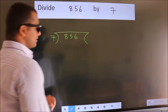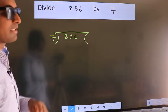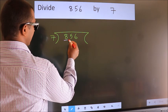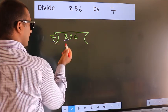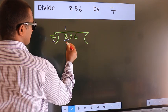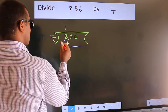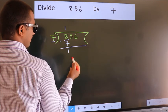This is step 1. Next, here we have 8, here 7. A number close to 8 in the 7 times table is 7 once, which is 7. Now we should subtract. We get 1.